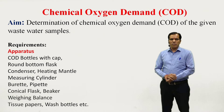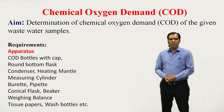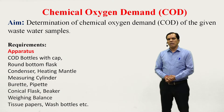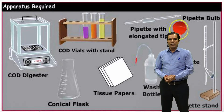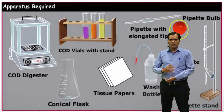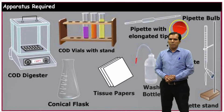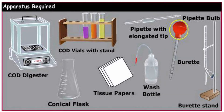The apparatus required to perform this experiment include: COD bottle with cap, round bottom flask, condenser, heating mantle, measuring cylinder, burette, pipette, conical flask, beaker, weighing balance, tissue paper, wash bottle, COD digester, COD vials with stand, pipette with elongated tube, pipette bulb, and burette stand.